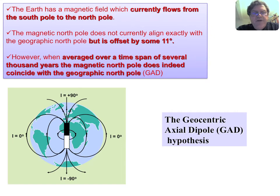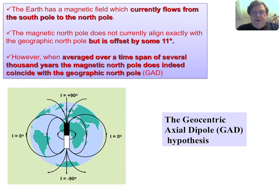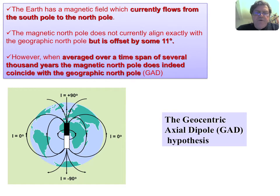If you sample rock sequences for a few thousand years and take a mean, you will have a magnetic axis which is more or less aligned with the Earth's rotation axis. This is called the Axial Dipole Hypothesis, and it is one of the most important hypotheses we use. I questioned this hypothesis some years ago, but that was not very popular. For the purpose of this talk, we assume the magnetic axis is aligned with the rotation axis.